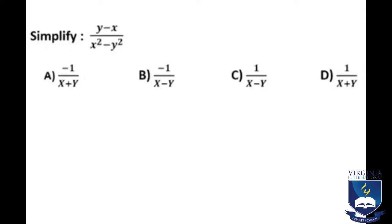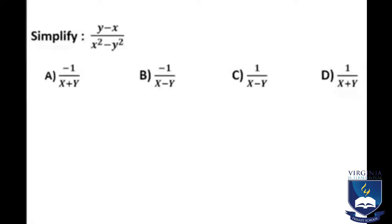As you may know, this is a rational expression. To simplify it, I'm going to rewrite the numerator so that x and y are in the same order as the denominator. To switch x and y, we factor out a negative, giving us negative (x minus y).